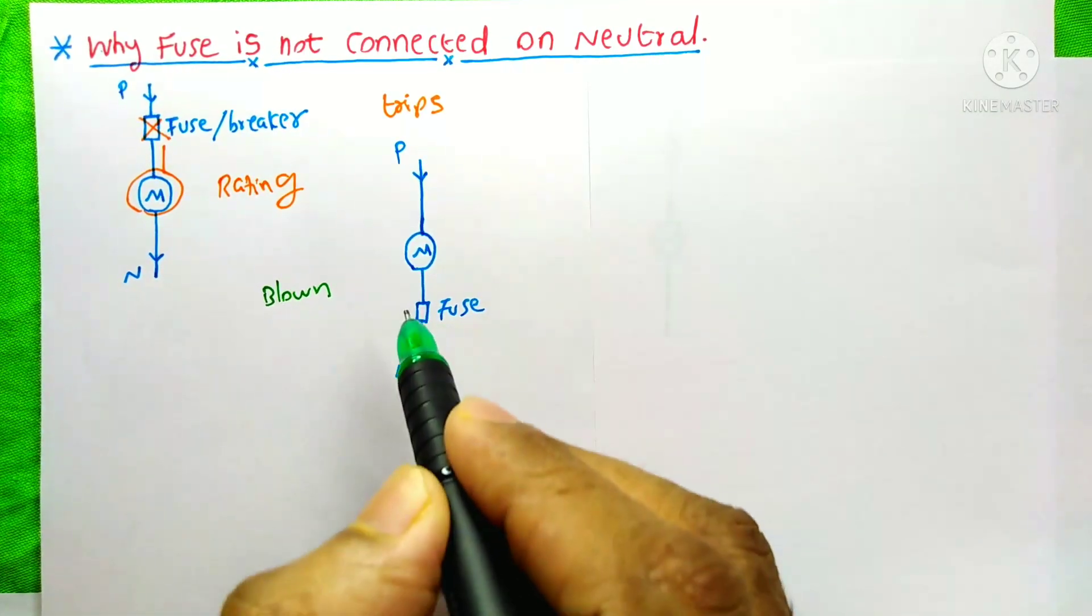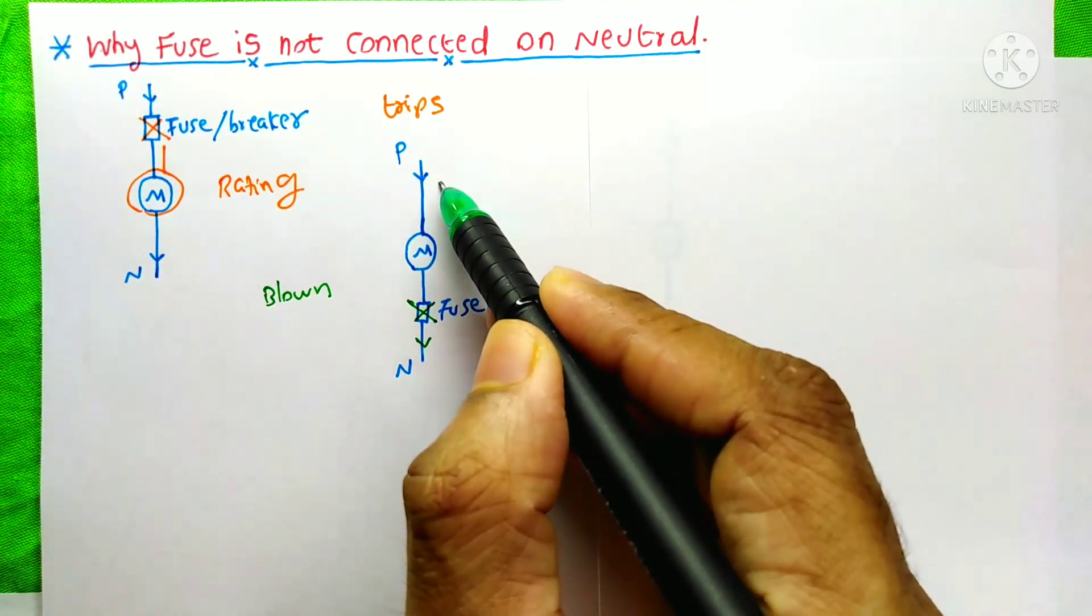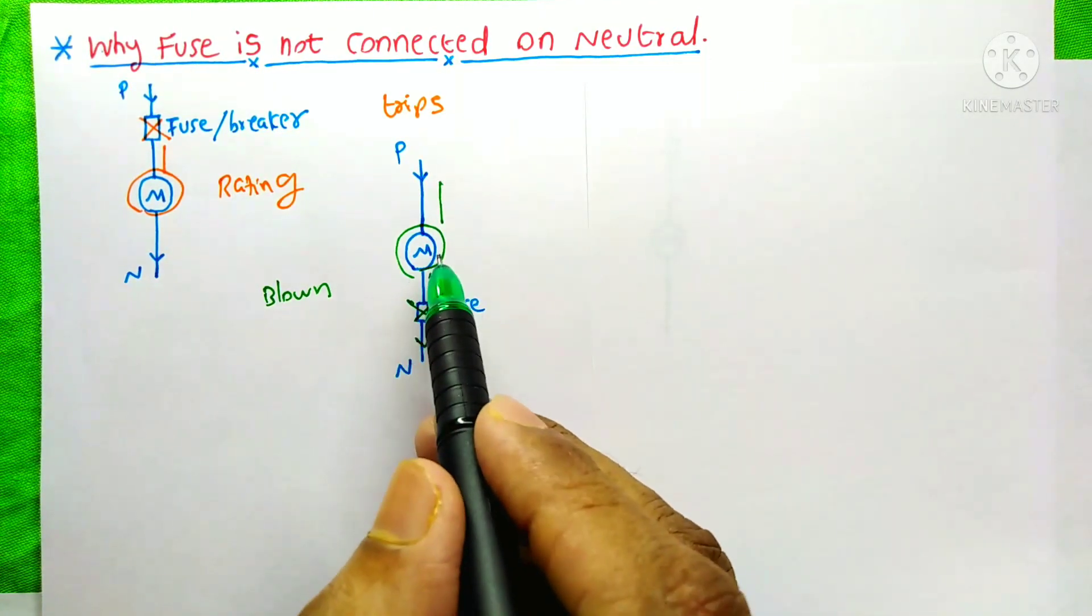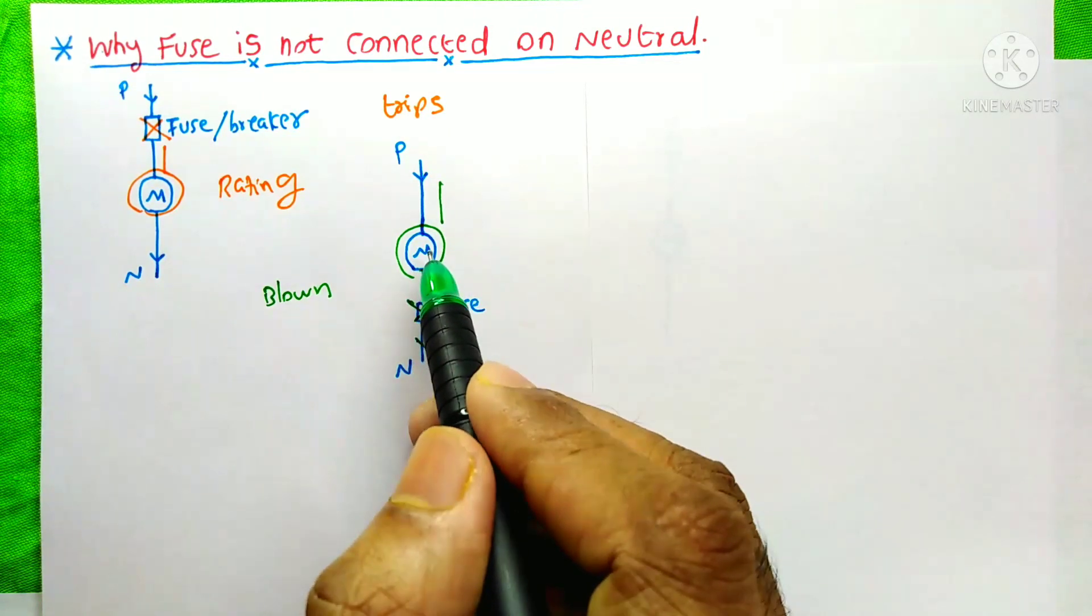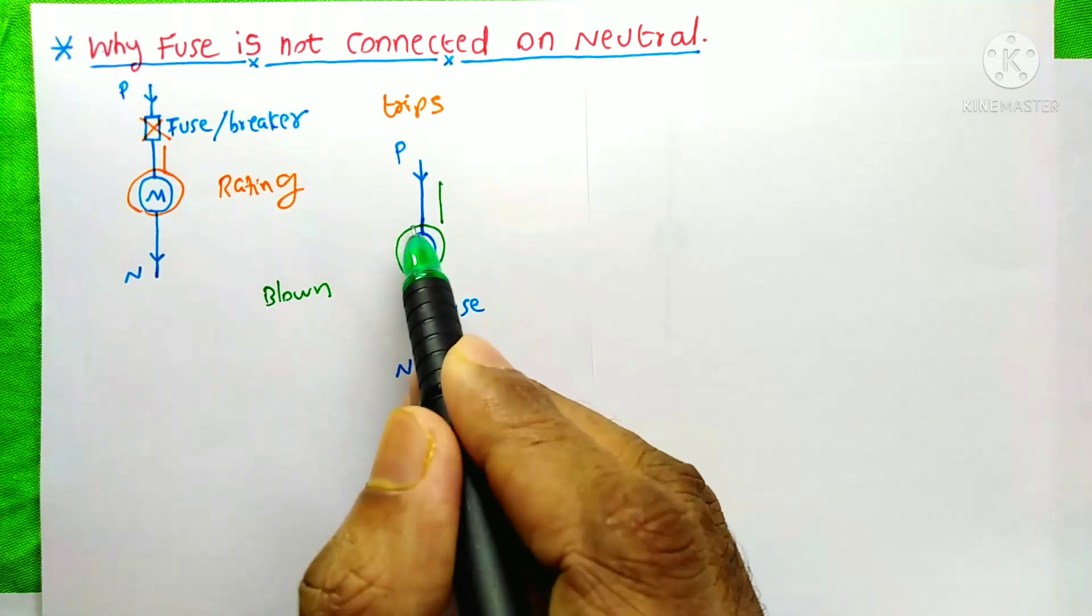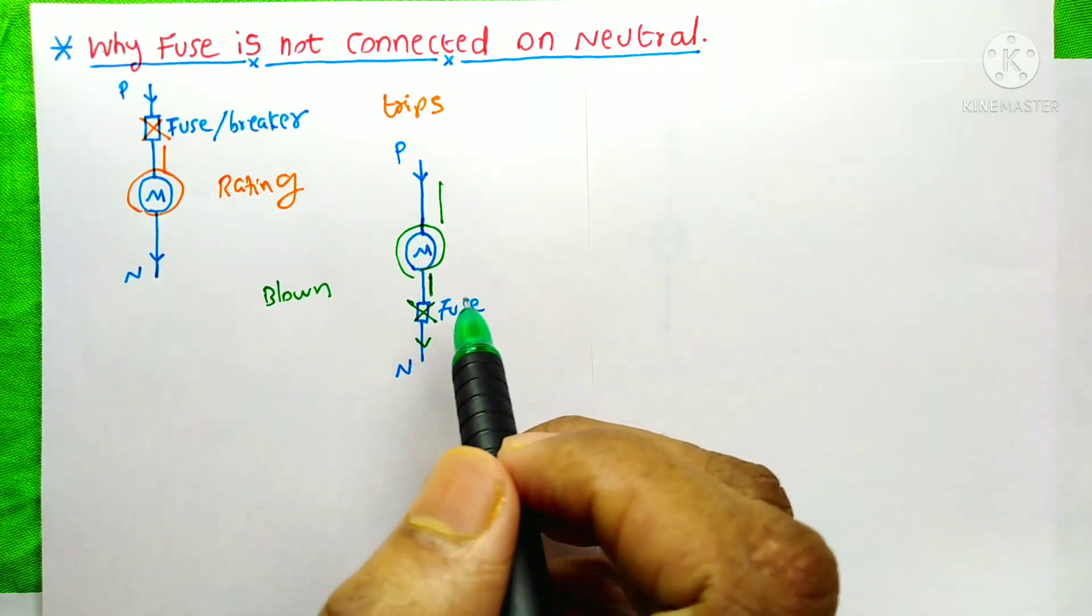Here, after the fuse is blown off, the current will exist on this path. If any person comes here to check the motor and that person touches the terminals of the motor or this phase wire, he will get the shock.